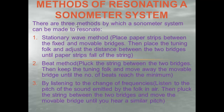The third method is by listening to the change of frequencies, but you have to be an avid listener. You tune your ear to the pitch of the sound emitted by the tuning fork, then pluck the string and move the movable bridge until you hear a similar pitch. When the frequency matches, resonance occurs. This is the most ineffective yet still accurate method. All three techniques ultimately produce resonance, which is the key to a sonometer system and these experiments.